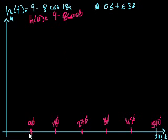So 90 divided by 18 is 5, right? So this is at 5 seconds, this is at 10 seconds, this is 15 seconds, this is 20 seconds, this is 25 seconds, and this is 30 seconds.